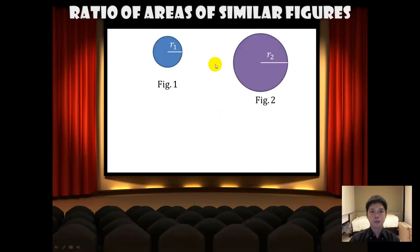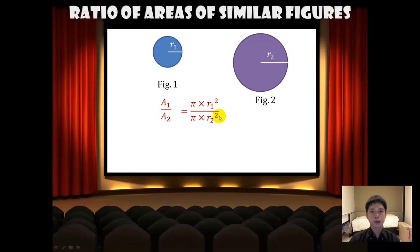Next, let's look at two similar circles. A1 over A2 will be equal to pi times r1 squared over pi times r2 squared. Cancelling the common terms, the ratio of the corresponding areas equals r1 over r2, squared.